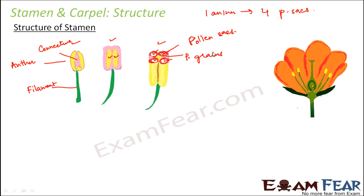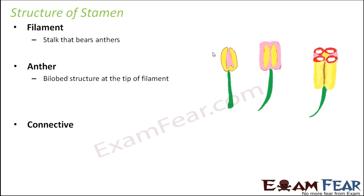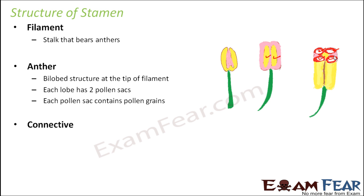This is all about the structure of stamen. To summarize: the first part is the filament — the stalk that bears the anthers. The second is the anther — the bilobed or two-lobed structure at the tip of the filament; each lobe has two pollen sacs, giving a total of four pollen sacs, and each pollen sac contains pollen grains, which are the male gametes or male sex cells. The third part is the connective — attached to the back of the anther, providing support to the lobes. Together these three parts constitute the stamen, the male reproductive part of a flower.